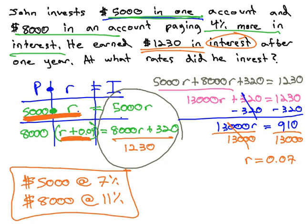We found our solutions by organizing our principals, rates, and interest, expressing the rate as R plus 0.04, showing the 4% more than the first rate, and then using our total to come up with an equation.